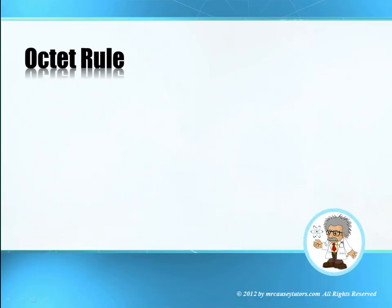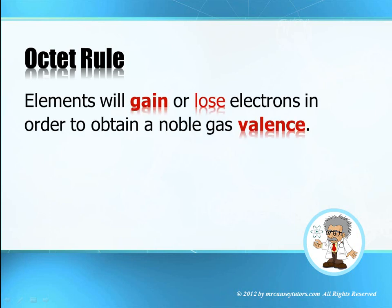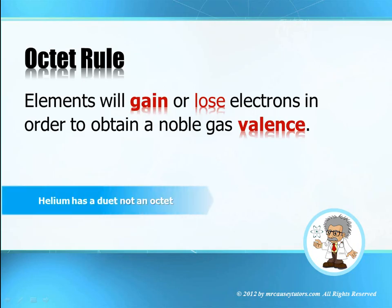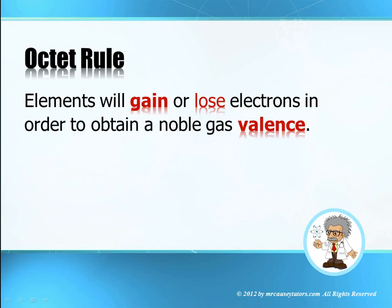One of the first things we need to learn in discussing how bonding occurs and how we're going to look at oxidation numbers is to understand the octet rule. The octet rule simply states elements will gain or lose electrons in order to obtain a noble gas valence. They don't become a noble gas — they just gain or lose electrons in order to obtain a noble gas valence.